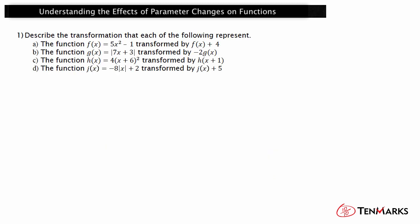Let's look at some examples. Describe the transformation that each of the following represents. The function f(x) = 5x² − 1 transformed by f(x) + 4. You can see that in f(x) + 4, the 4 is being added to the function value f(x). So this is a vertical shift. Since k is positive, this represents a vertical translation of f(x) 4 units upward.